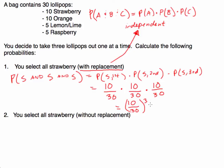We put (10/30)³ in our calculator: 10 divided by 30 raised to the third power. Rounding to the thousandths place, we get a probability of 0.037. That is the probability of getting three strawberries on three successive picks with replacement.